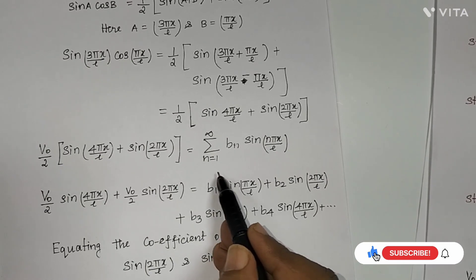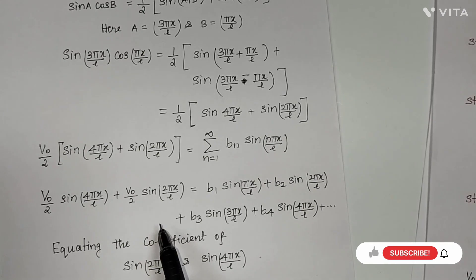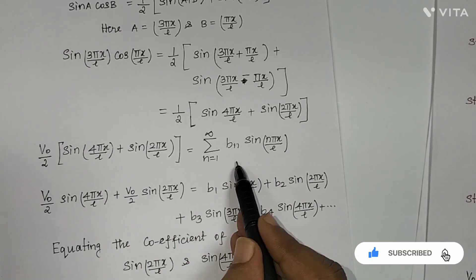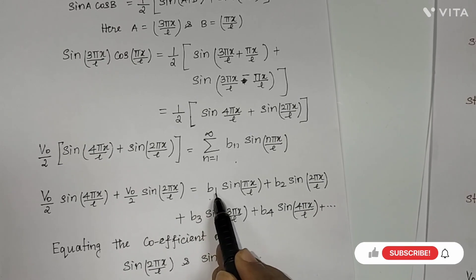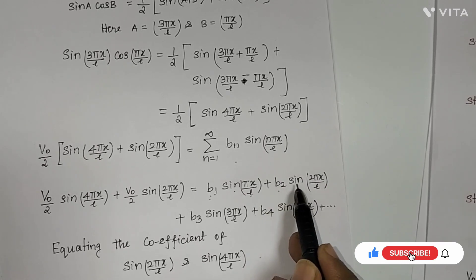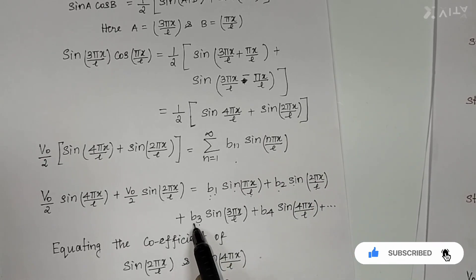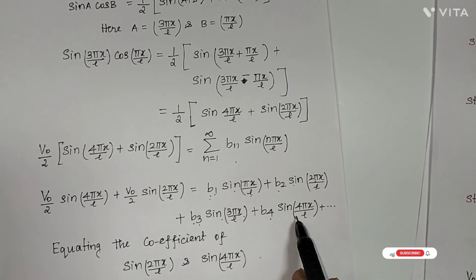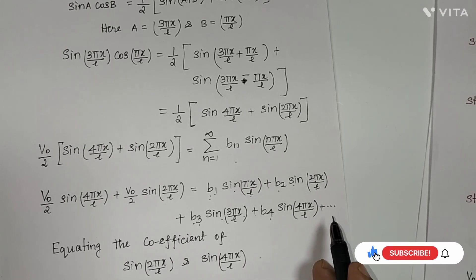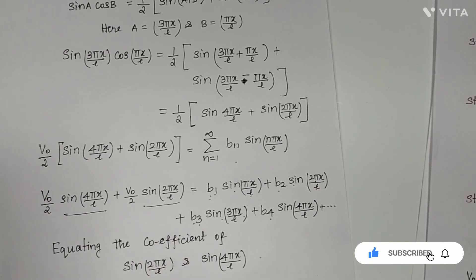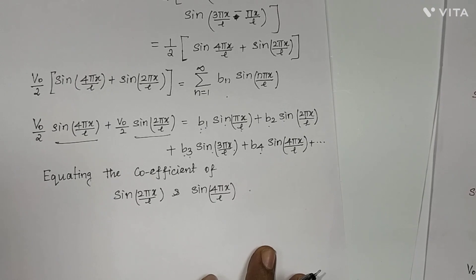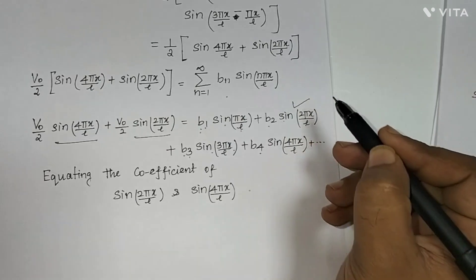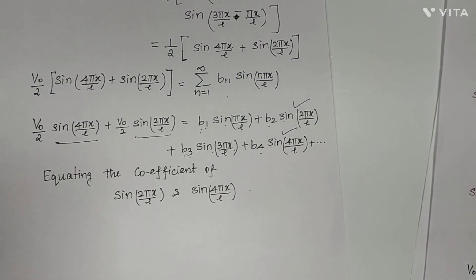On the right-hand side, we expand the series: b1·sin(πx/L) + b2·sin(2πx/L) + b3·sin(3πx/L) + b4·sin(4πx/L) + ... Equating coefficients of sin(2πx/L) and sin(4πx/L) on both sides, and noting that all other terms on the left are zero, the remaining bn values are zero.